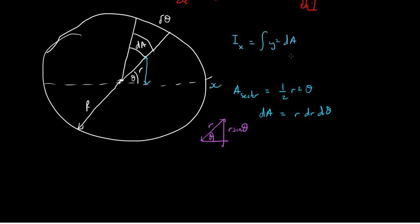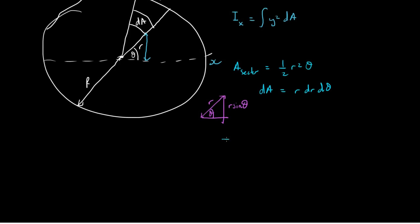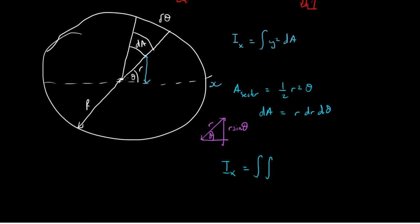So now if we substitute these in to the integral, we end up with I_x is equal to a double integral. Because we're integrating from 0 to the end here, but also all the way around the circle. So we're integrating all the way around the circle. We're also integrating from 0 to r. And of y squared, well, y is equal to r sin theta, so it's r squared sin squared theta times by the area element, which is r dr d theta.